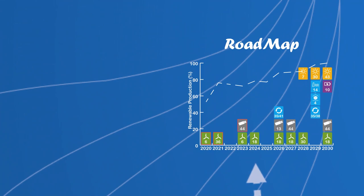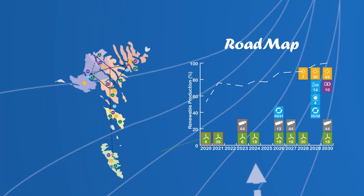The main output of the study is the roadmap. The roadmap specifies each investment in wind farms, cables, storage, etc. The location of each investment is also known from the optimization, as shown through the following animations.